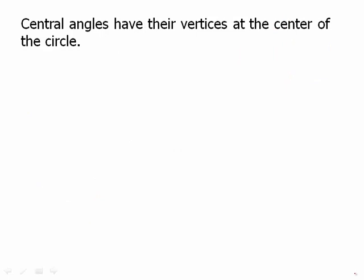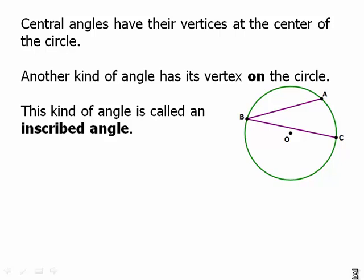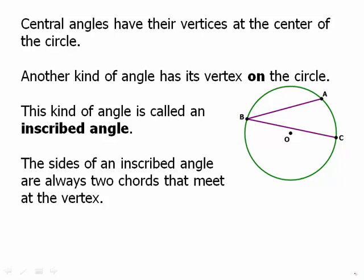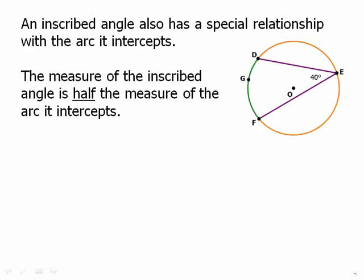Central angles have their vertices at the center of the circle. Another kind of angle has its vertex on the circle. Point B is on the circle — this kind of angle is called an inscribed angle. The sides of an inscribed angle are always two chords that meet at the vertex. So this angle is formed by chords AB and BC, two chords that share a common endpoint B. That common endpoint is the vertex of the inscribed angle. An inscribed angle also has a special relationship with the arc it intercepts.